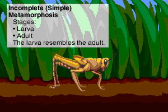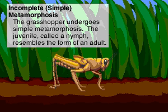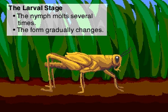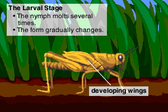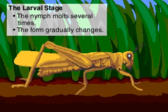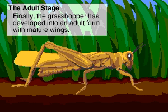Incomplete or simple metamorphosis is a gradual changing of form from larva to adult, as shown by the grasshopper. The larval grasshopper, or nymph, resembles the adult members of its species except for underdeveloped wings. Each time the nymph molts or sheds its skin, the wings are further developed until their form is that of an adult. The metamorphosis is considered incomplete because there is no breakdown of tissues and no pupal stage.